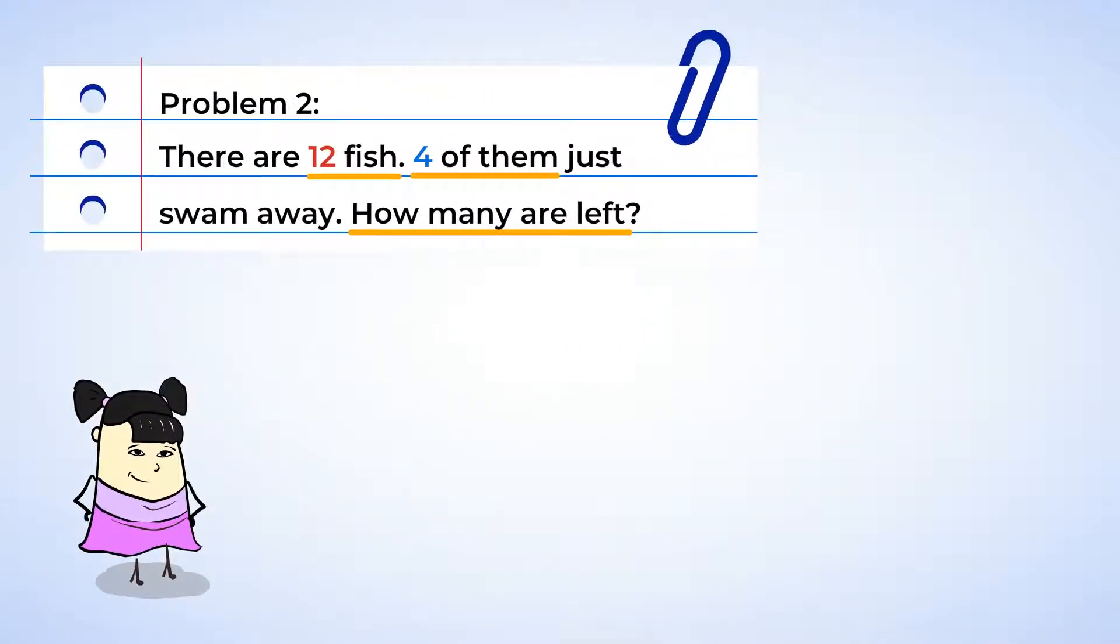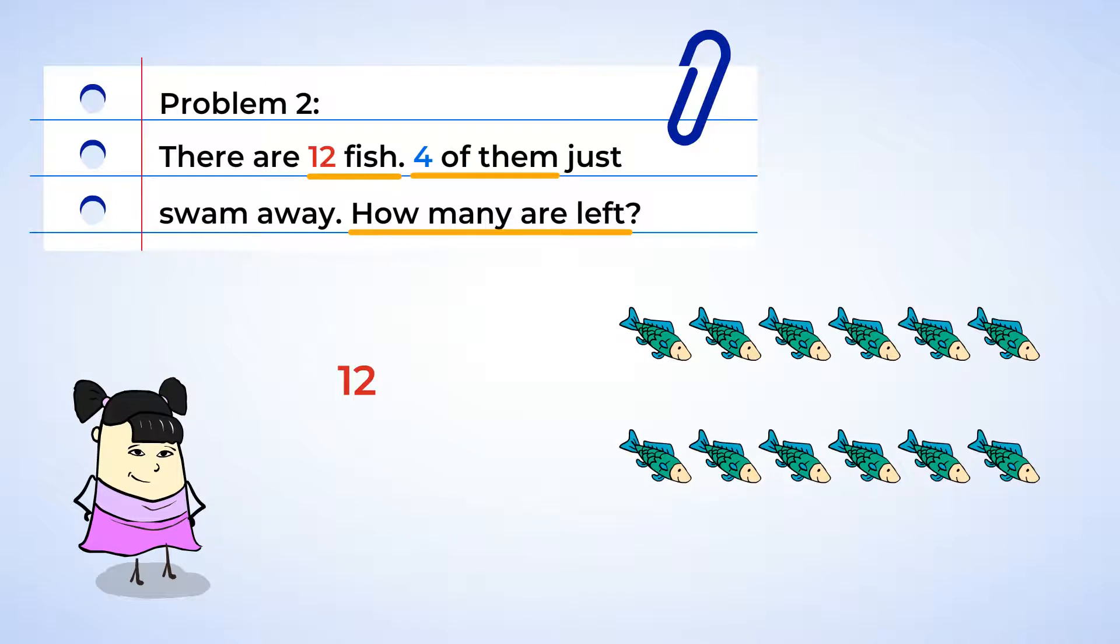In our story, we had twelve fish, but then that number got smaller. So twelve is the first number in our subtraction sentence. Of those twelve fish, four of them swam away. So we need a minus sign and the number four. Then we put the equal sign. But because we don't know the third number, we can put a question mark in its place just like before. So, now our subtraction sentence looks like this. Twelve minus four equals what?